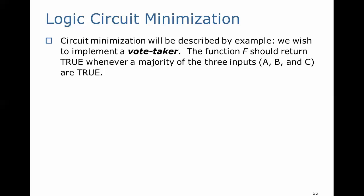The example we're going to use is a vote taker. The function f should return true whenever a majority of the three inputs, a, b, and c, are true — so two or more.